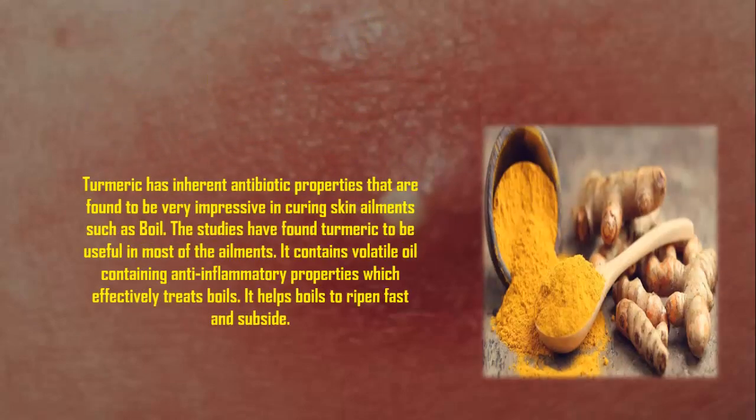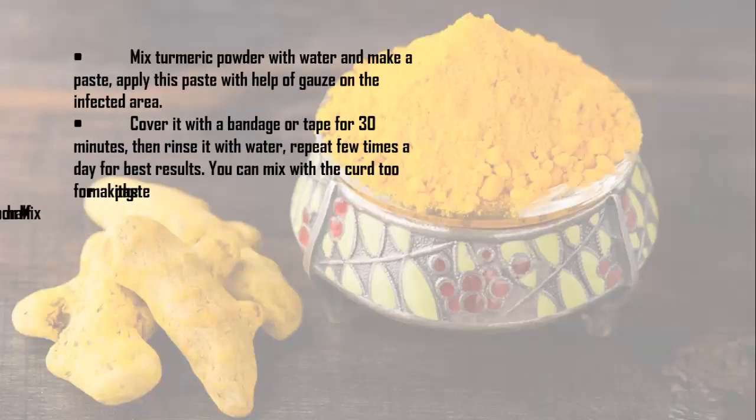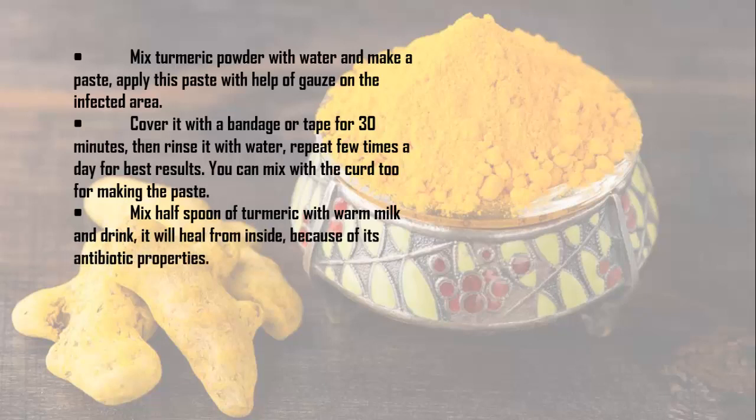Turmeric has inherent antibiotic properties that are very impressive in curing skin ailments such as boils. It contains volatile oils with anti-inflammatory properties which effectively treat boils and help them ripen and subside fast. Mix turmeric powder with water to make a paste, apply it with gauze on the infected area, cover with a bandage for 30 minutes, then rinse with water. Repeat a few times a day. You can also mix half a spoon of turmeric with warm milk and drink it to heal from inside.